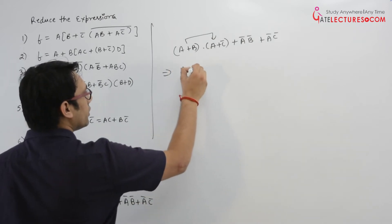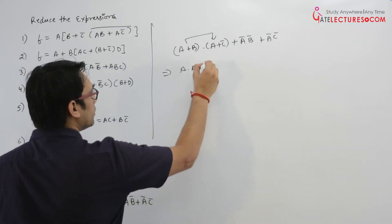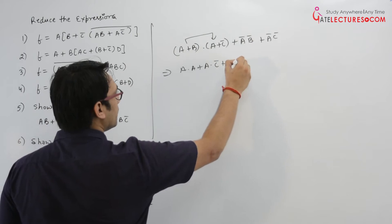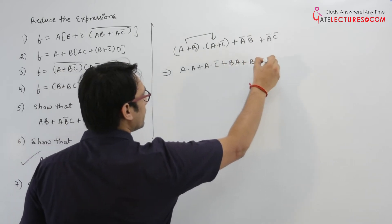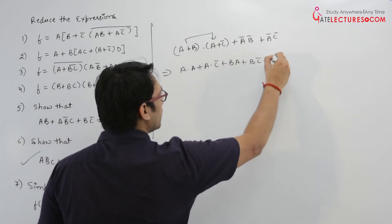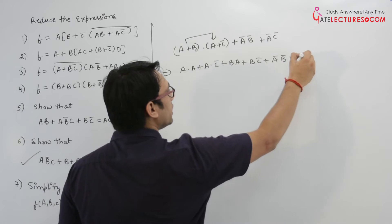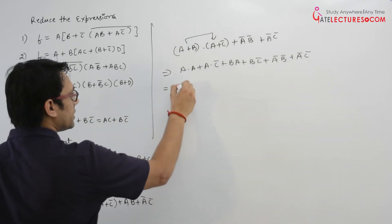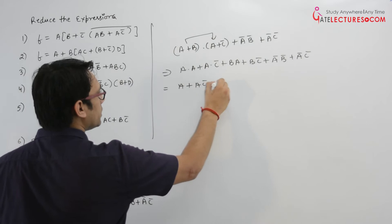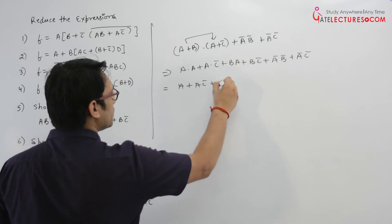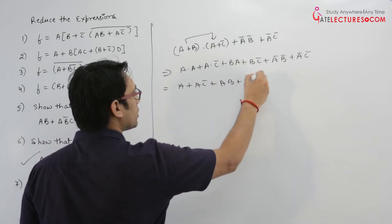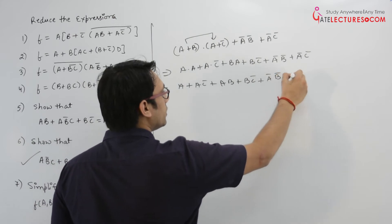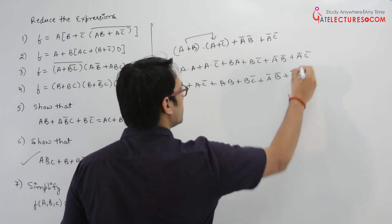So it is A dot A plus A dot C complement plus A B plus B C complement plus A complement B complement plus A complement C complement. This can be simplified as A plus A C complement plus A B plus B C complement plus A complement B complement plus A complement C complement.